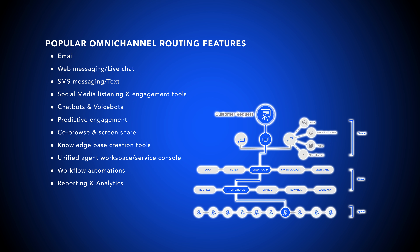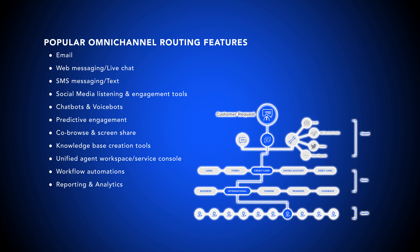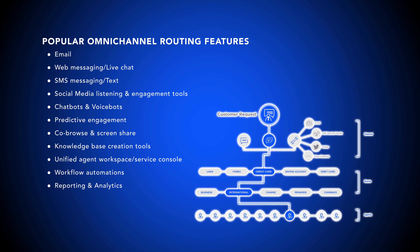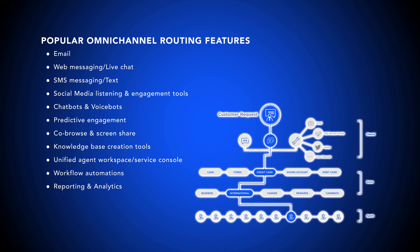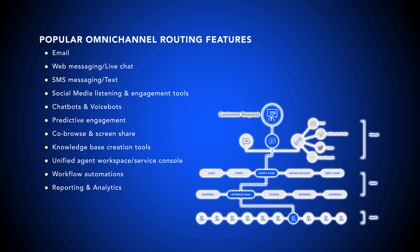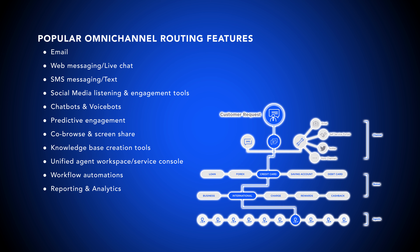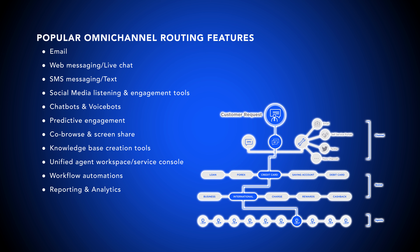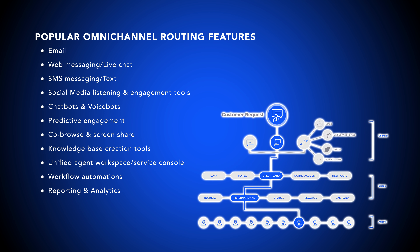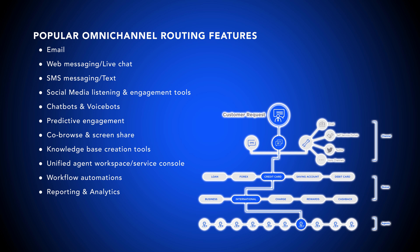Several CCaaS providers offer Omni-Channel Routing as part of an all-in-one solution that unites multiple communication channels into one agent interface. This single pane of glass communication inbox organizes interactions according to customer conversation history, preventing communication silos. For providers that don't include it as a feature, integrations with third-party apps such as Salesforce Omni-Channel can be used.